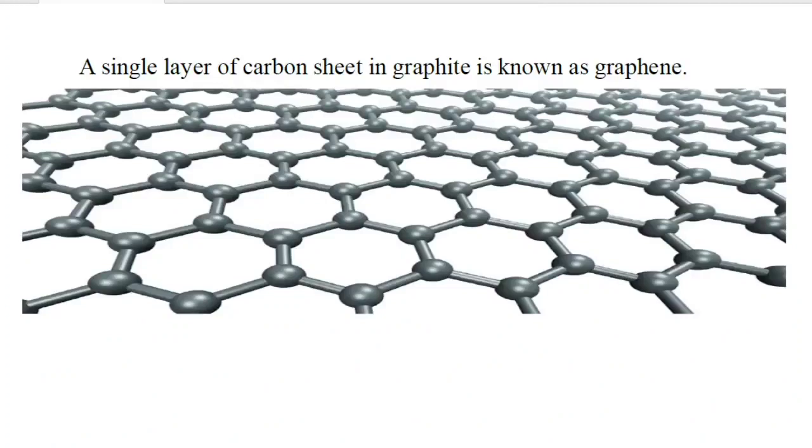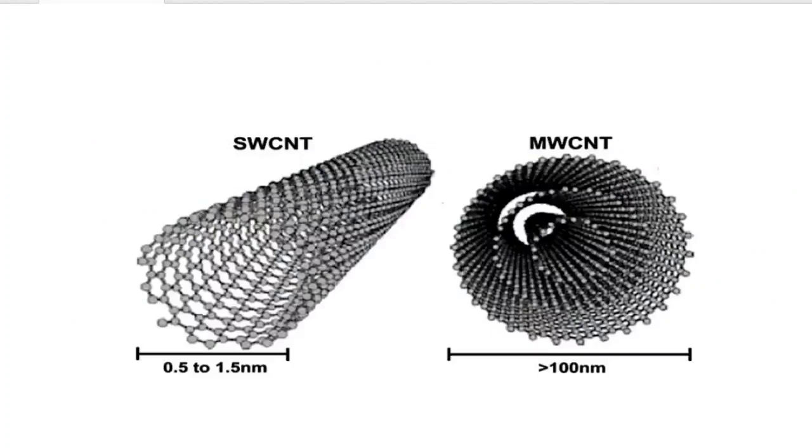A single layer of carbon sheet in graphite is known as graphene. And carbon nanotubes are graphene strips, they are rolled up into hollow columns or tubes.